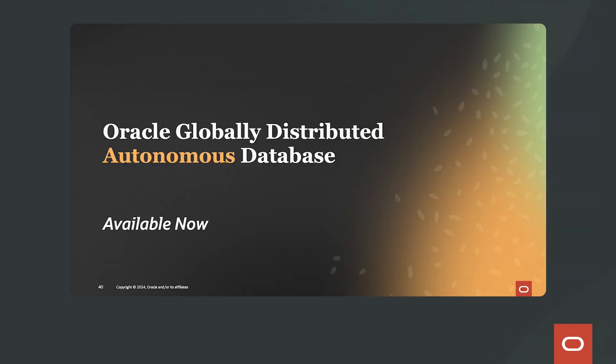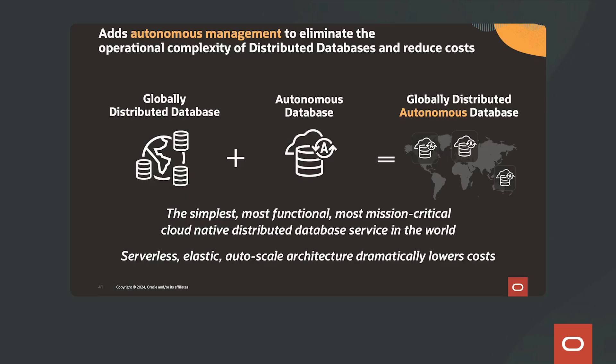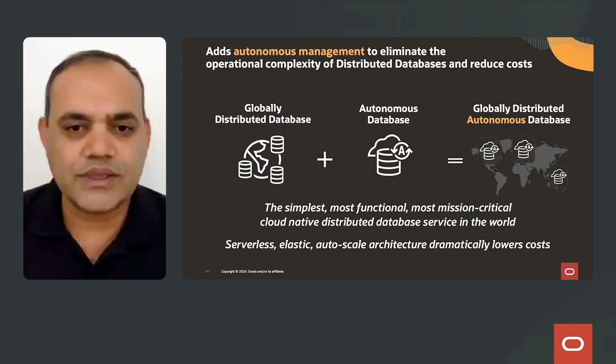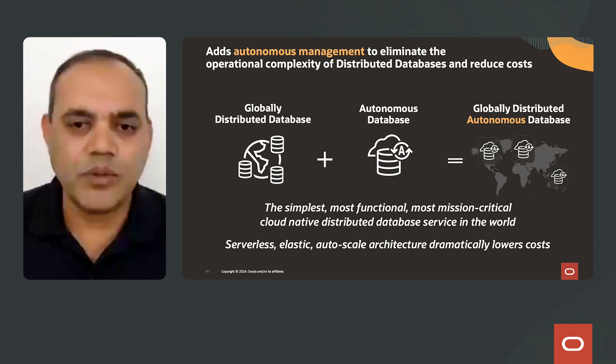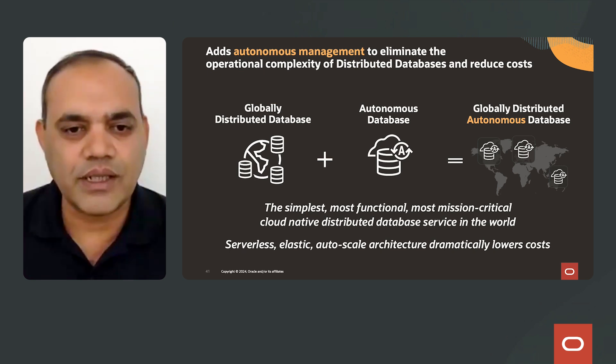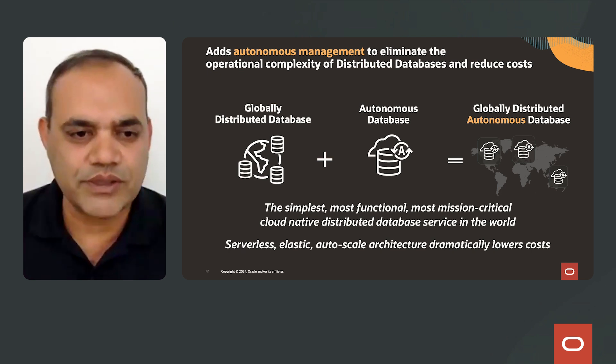Oracle recently released Oracle Globally Distributed Autonomous Database. It adds autonomous management to eliminate the operational complexity of a distributed database and reduces cost. It is the simplest, most functional, most mission-critical cloud-native distributed database service.